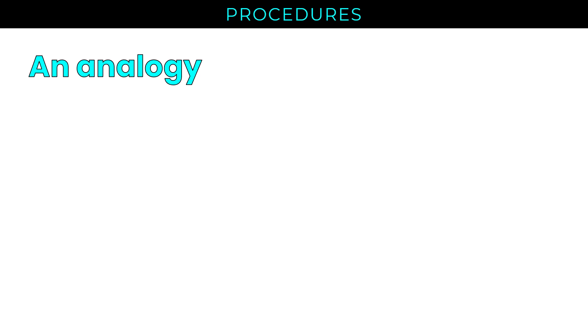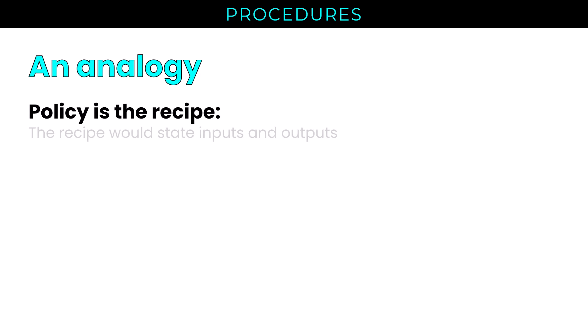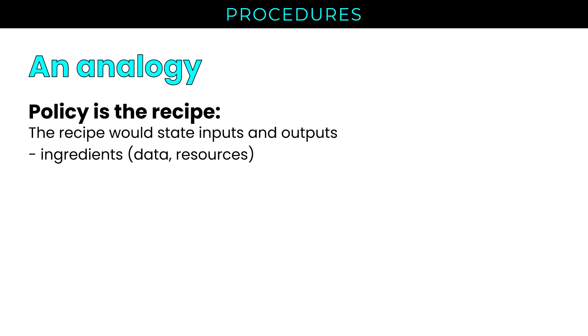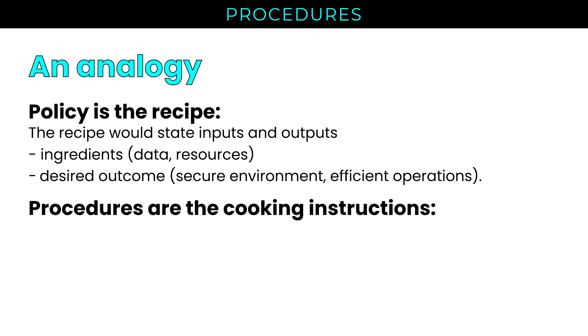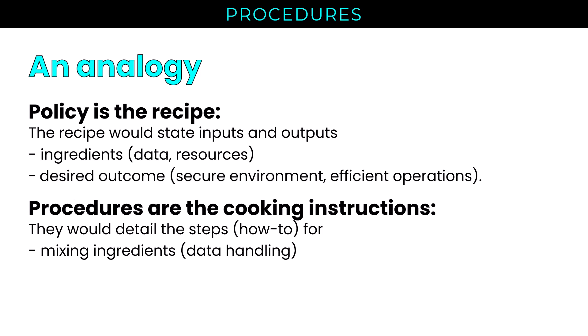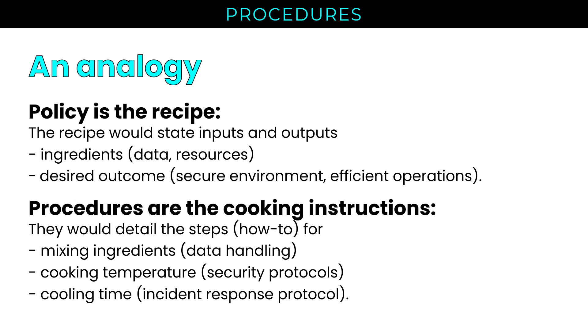If you're new to cybersecurity, here's an analogy. The policy is the recipe — it states the inputs and outputs, the ingredients. For security, we're talking about the data and the resources, and we need a desired outcome: a secure environment and efficient operations. The procedures are the cooking instructions. For a pie, I'm going to put it in the oven, cook it at a specific temperature. That details the how-to. Mixing the ingredients equates to data handling, cooking temperature equates to security protocols, and cooling time equates to our incident response protocol.